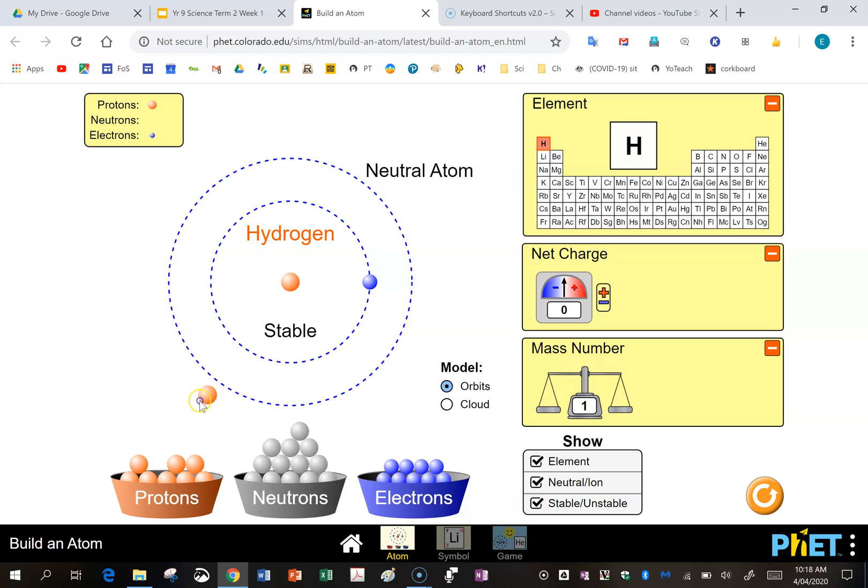So let's move in another proton. Now this is going to take us to the second element, helium. Now it's telling me we're unstable. Now this periodic table doesn't tell us the mass number, but if you look at your periodic table you'll know that the mass number of helium is actually 4, not 2 as is shown here. So we need to add in two neutrons to take the mass number to 4. Now it's telling us here this is an ion. And that's because helium is number 2 and it requires two electrons.